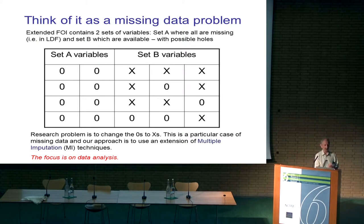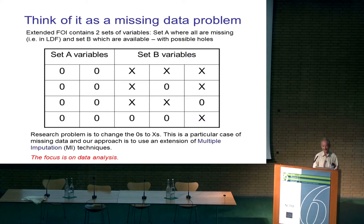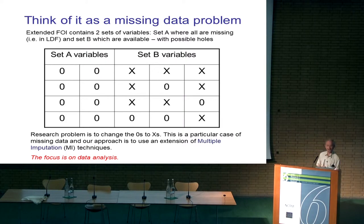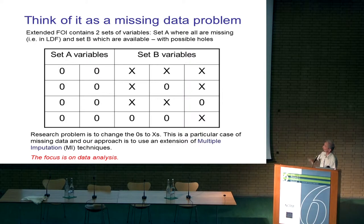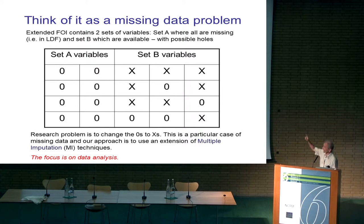I want to go back now and think about this whole thing in a rather different way, and I'm going to try and persuade you that this is just a special case of missing data. This is what I call the extended file of interest. The set A variables are the ones in the linking data file — we don't have those; we hope to bring them in. Our file of interest contains the set B variables, which we know. For the set A variables, everything is missing initially, and this is what we want to fix — we want to change the zeros to the x's.